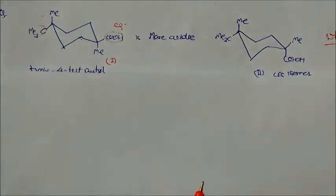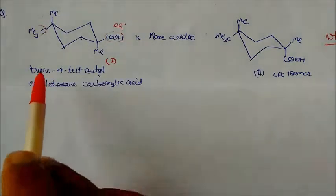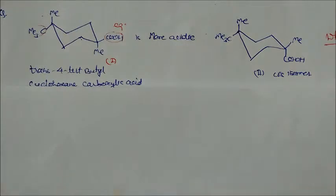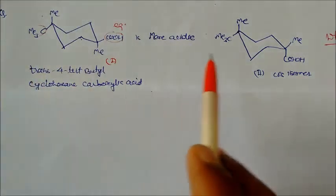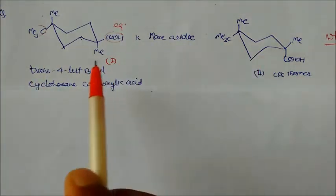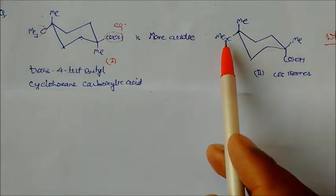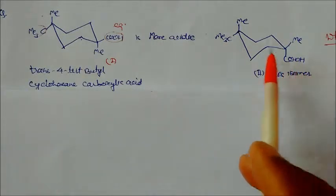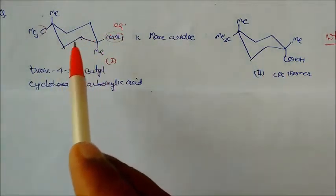This compound is trans-4-tertiary-butyl-cyclohexane carboxylic acid, and this is the cis form. Cis means you can see this carbon—the tertiary butyl and the carboxylic acid are on the same side, and this is the axial side.